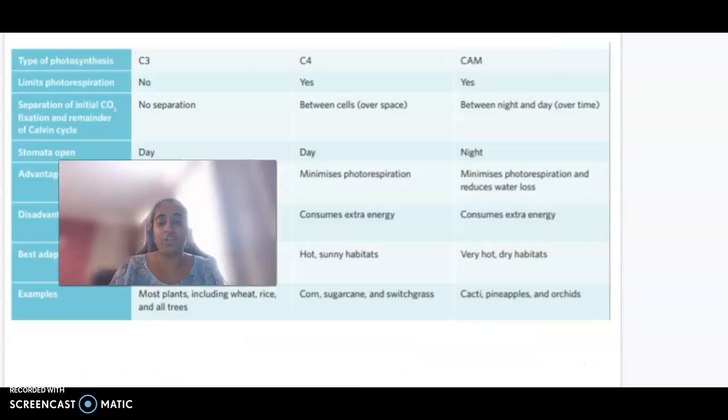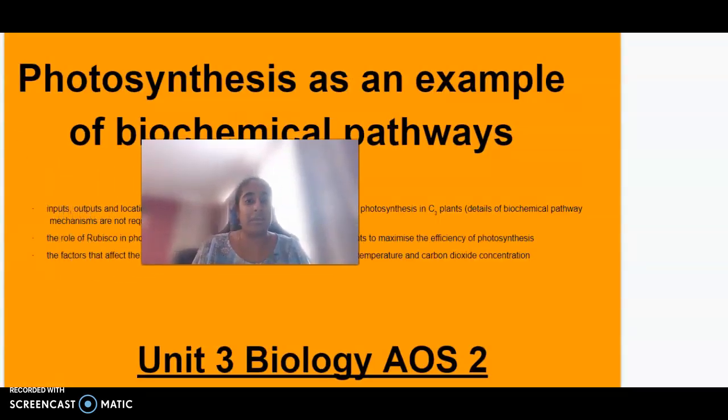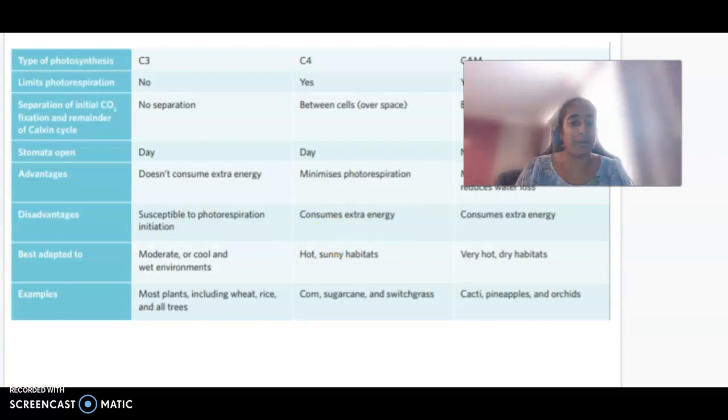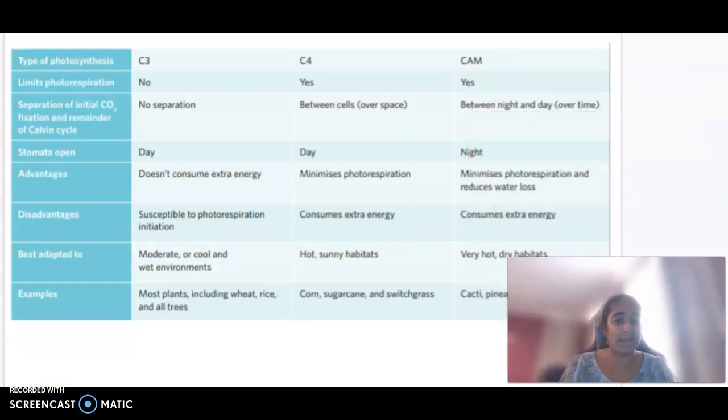Moving on to different types of photosynthesis. You might recall in the study design we need to know the role of rubisco, which we just spoke about, but also the adaptations of C3, C4, and CAM plants to maximize the efficiency of photosynthesis. This table from Ed Rollo summarizes this quite nicely.